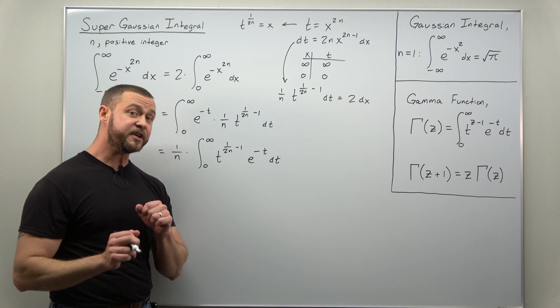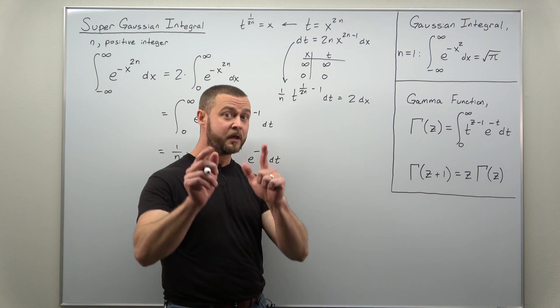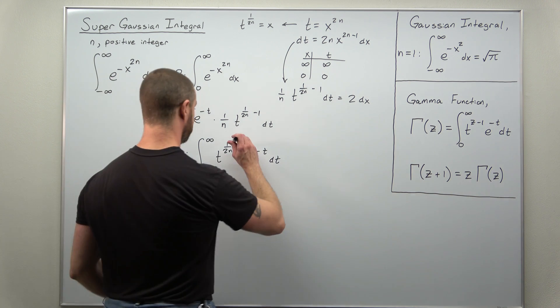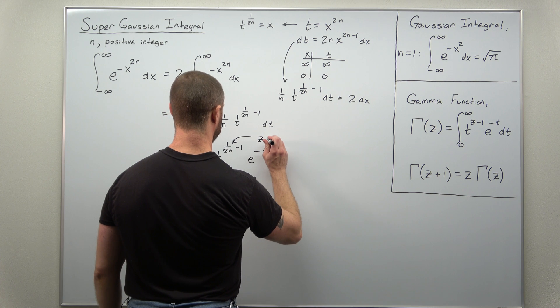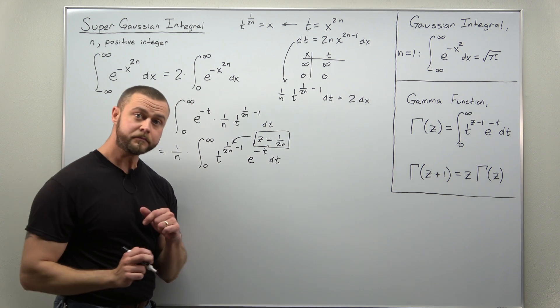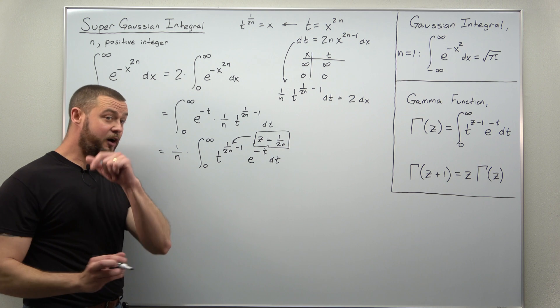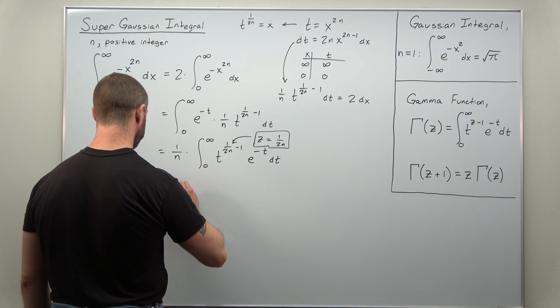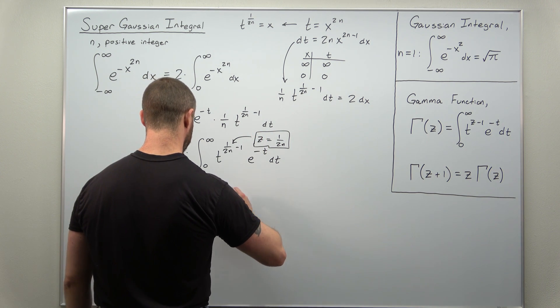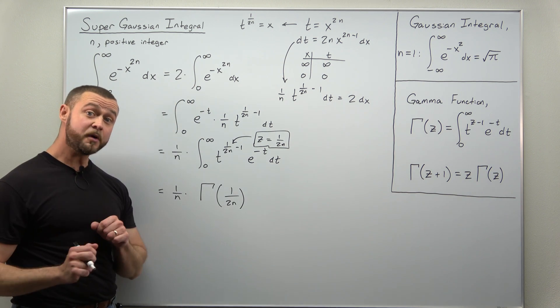And what we're going to notice here is that this integral is exactly the definition for the gamma function where z equals 1 divided by 2n. And that allows us to write this whole integral in terms of the gamma function. We have a factor of 1 over n. And that whole integral comes out to the gamma function of 1 divided by 2n. And that is most of the work here.